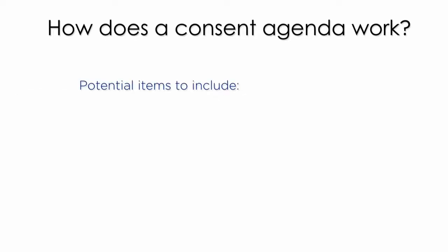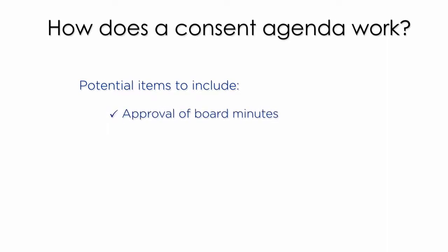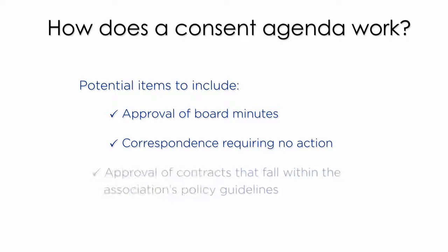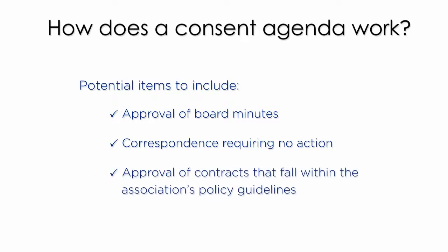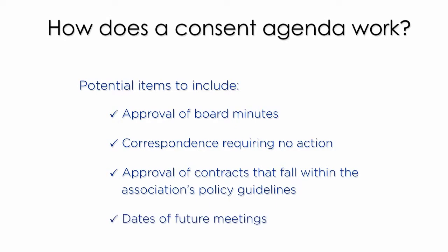Here are some examples of items that could be included in your Consent Item section: approval of board minutes, correspondence requiring no action, approval of contracts that fall within the Association's policy guidelines, and dates of future meetings.